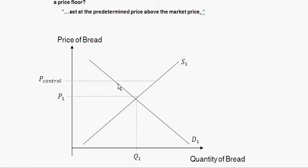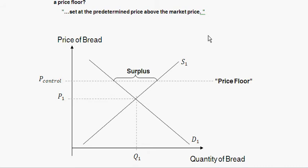At this controlled price, you can see it hits the demand curve at a quantity lower than where it hits the supply curve. So quantity demanded at that price is less than quantity supplied. The difference between the two is a surplus — more bread is produced than is demanded, and the difference is unsold, wasted bread.